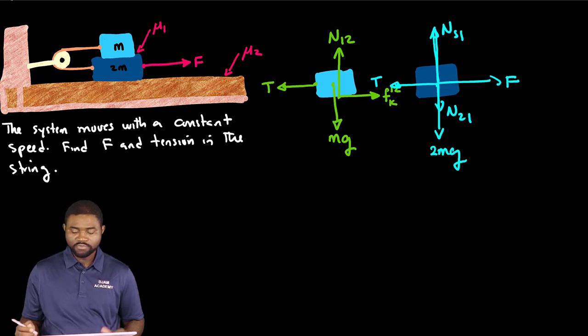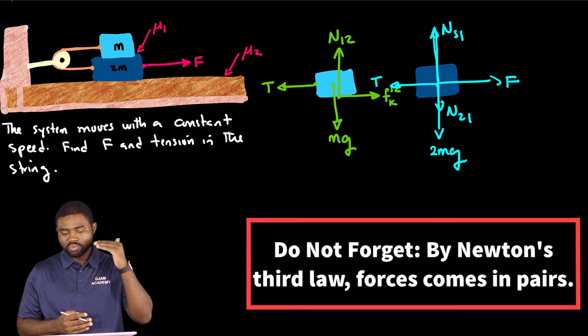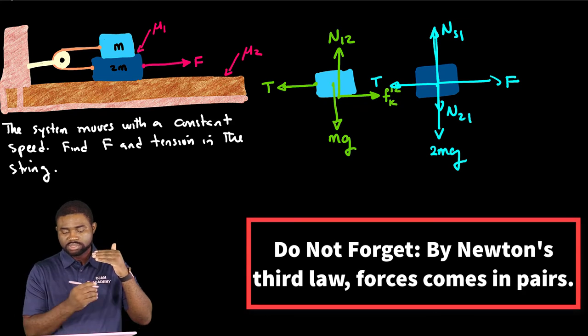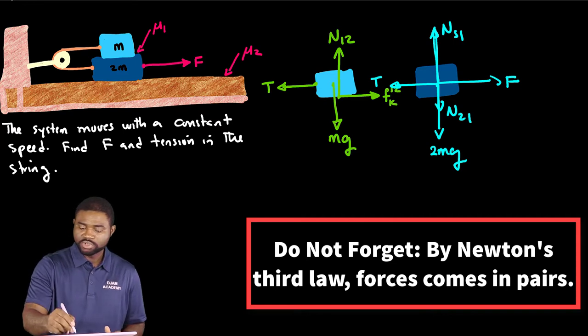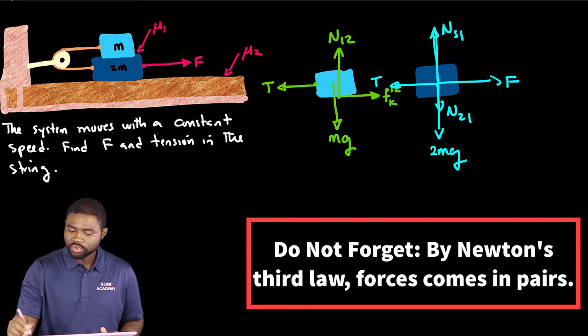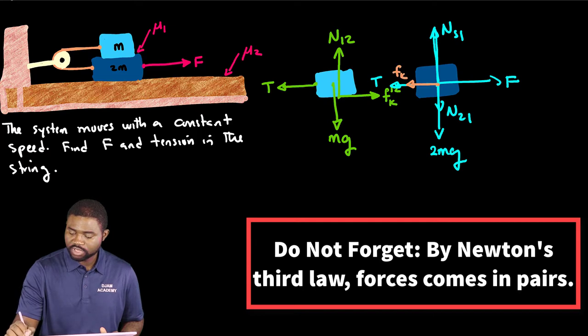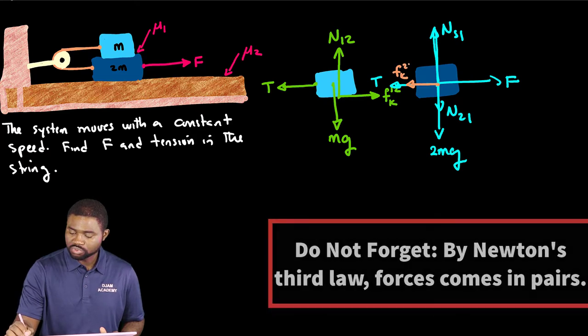Remember that the friction force on block one acts to the right. But the friction force on block two acts to the left. So if we include that there, we will have a friction force. This is Fk two on one.